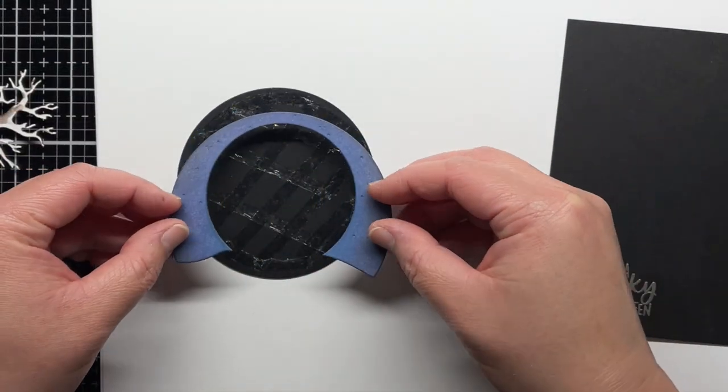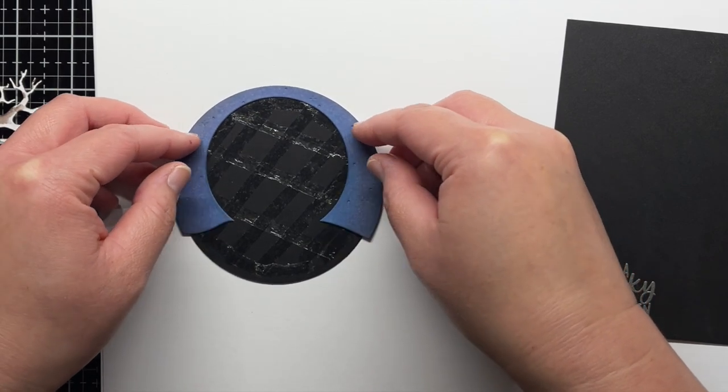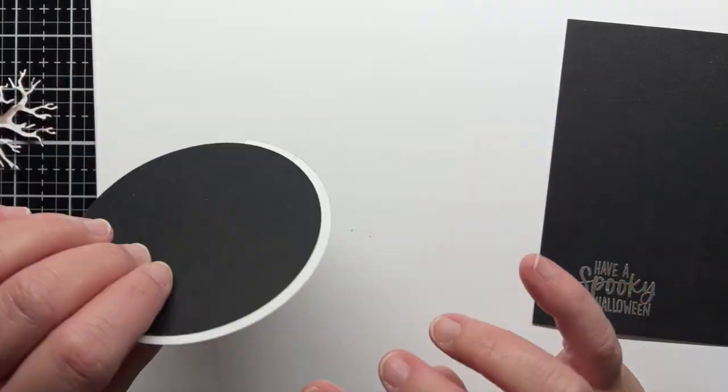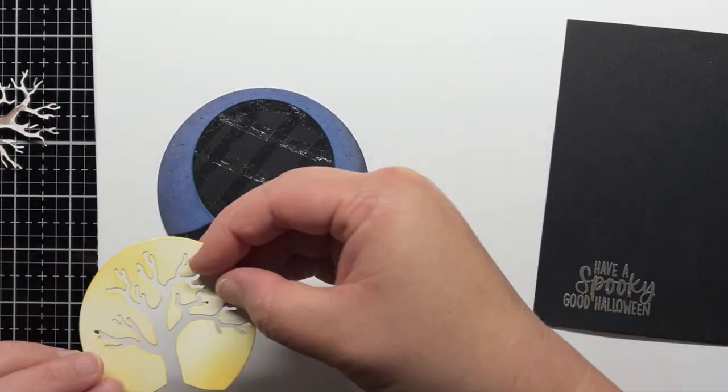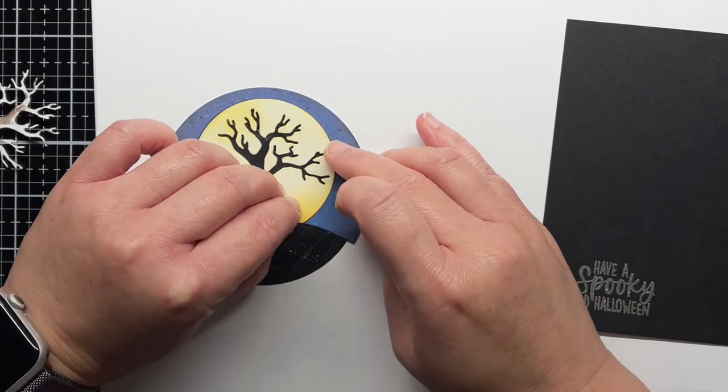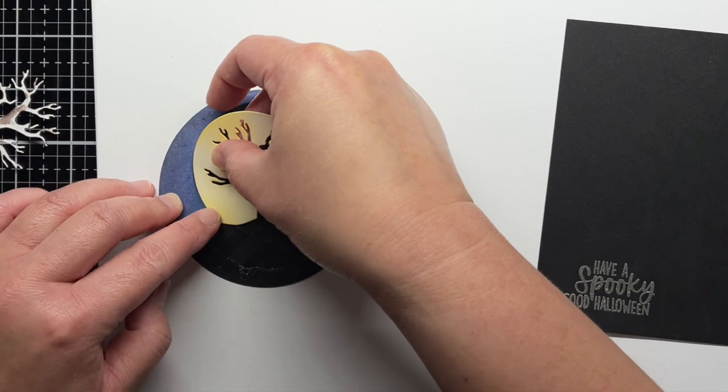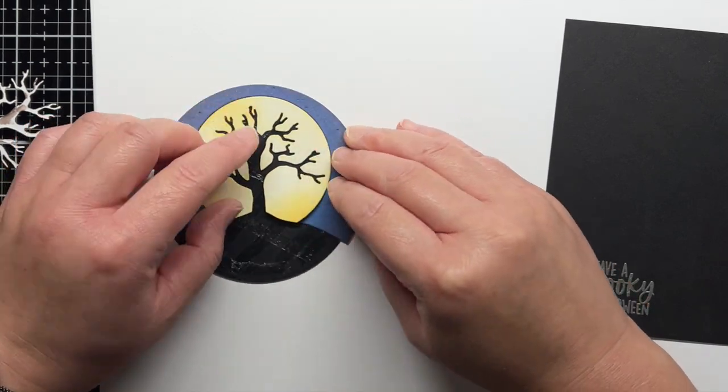I die-cut a circle of black cardstock slightly smaller than the Fright Night Circlescape and apply adhesive all over it. Then I line up the pieces of the Fright Night Circlescape and press them into the adhesive. I prefer adhering all the pieces together first and then adhering one circle to my card panel instead of trying to make sure that everything is centered one piece at a time on my card panel.